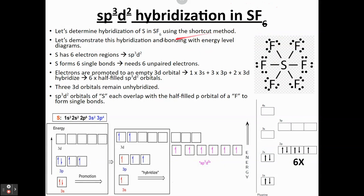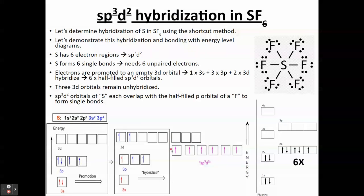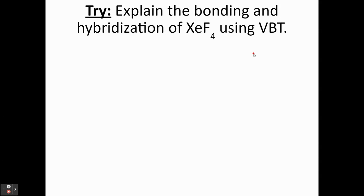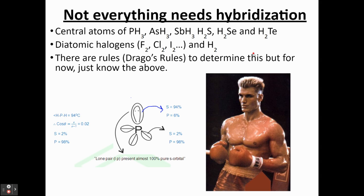You can try SF6 for the SP3D2. Done for you over here, but try it by hand and see if you can compare to that SF6 as well. So do a variety of examples to make sure that you understand how to explain hybridization or explain bonding using hybridization and valence bond theory.